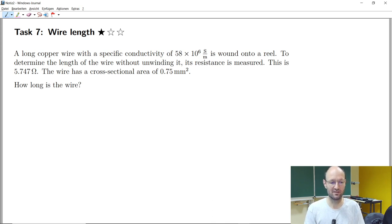Task 7 about wire length. We have a copper wire and here not the resistivity but the conductivity is given. Yesterday in the lecture we discussed resistivity. This is the reciprocal value in Siemens per meter and this is wound to some coil or to a reel.